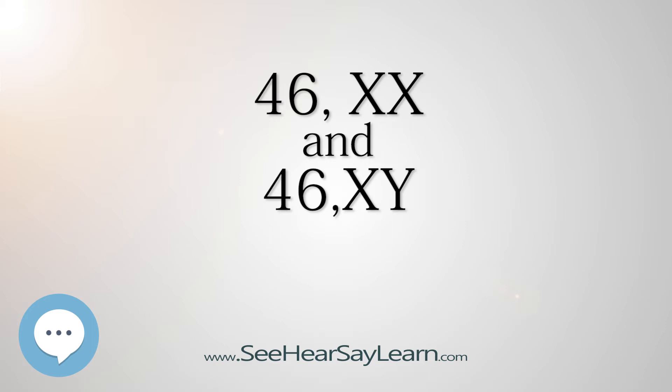46XX/46XY is an example of tetragametic chimerism because it requires four gametes — two sperm and two ova. It is most commonly explained by the in utero combination of two fertilized zygotes. Two ova from the mother are fertilized by two sperm from the father — one sperm contains an X chromosome, the other contains a Y chromosome — resulting in a zygote with an XY genotype and a zygote with an XX genotype.